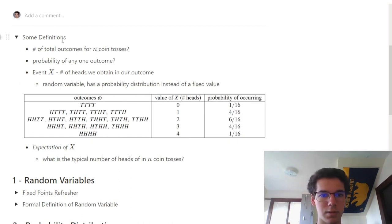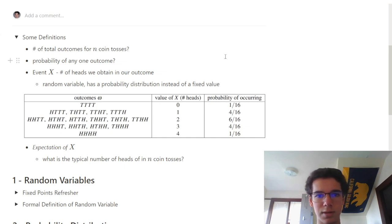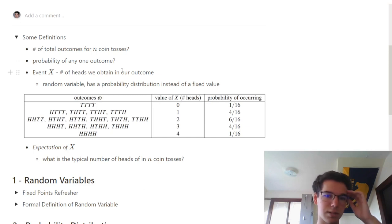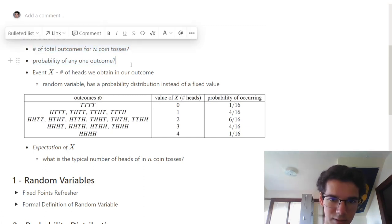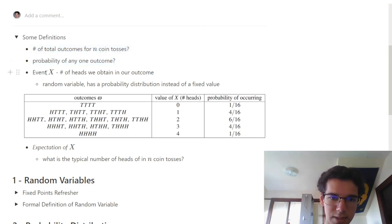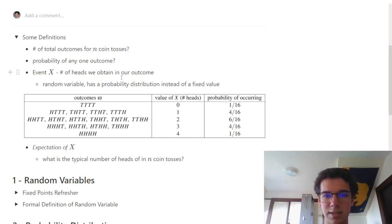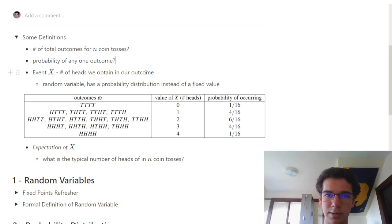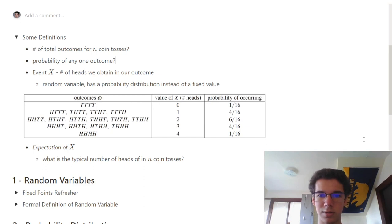What are the number of total outcomes for n coin tosses? It's just 2 to the n. The probability of any one outcome is equally likely. We're going to define this event, we're going to call it X, and we're going to say that X is the number of heads that we obtain in our outcome. Notice how this is not the same across all outcomes.